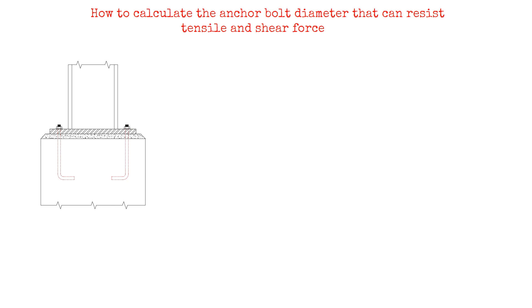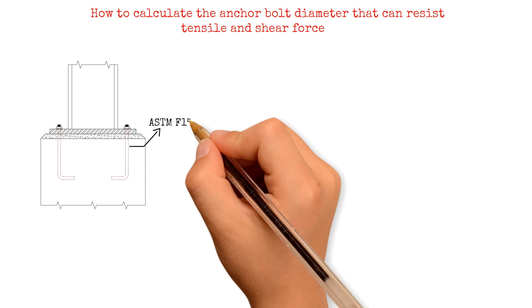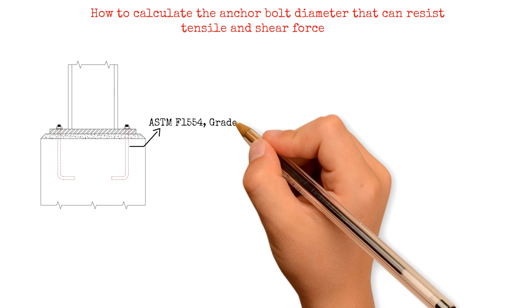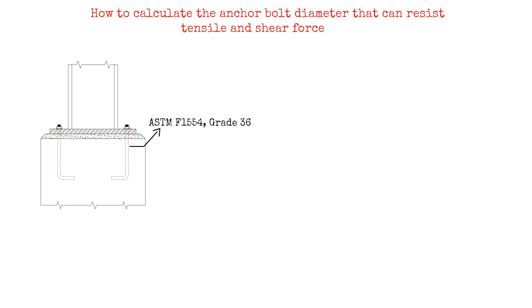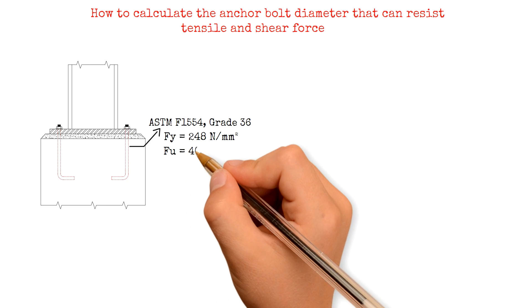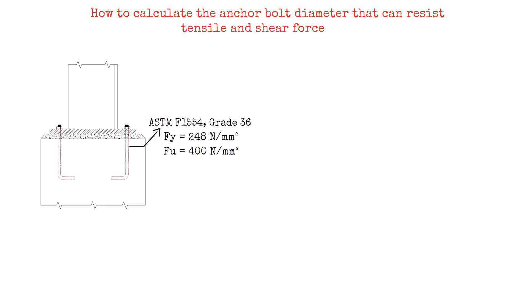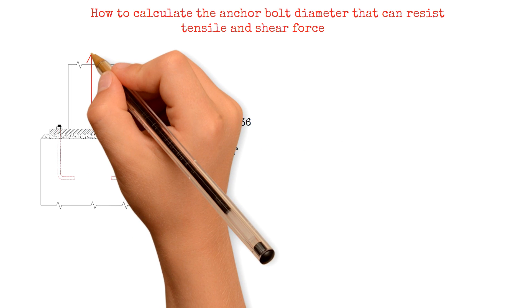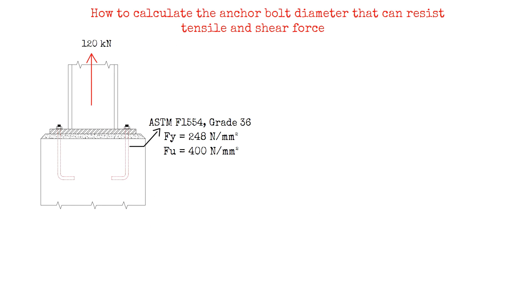Let us consider a steel column pinned down at a concrete pedestal with 4 anchor bolts, using ASTM F1554 grade 36, having a yield strength of 248 N/mm² and ultimate strength of 400 N/mm². If it is subjected to a tensile load of 120 kN, what would be the diameter of the anchor bolt? To work on that,